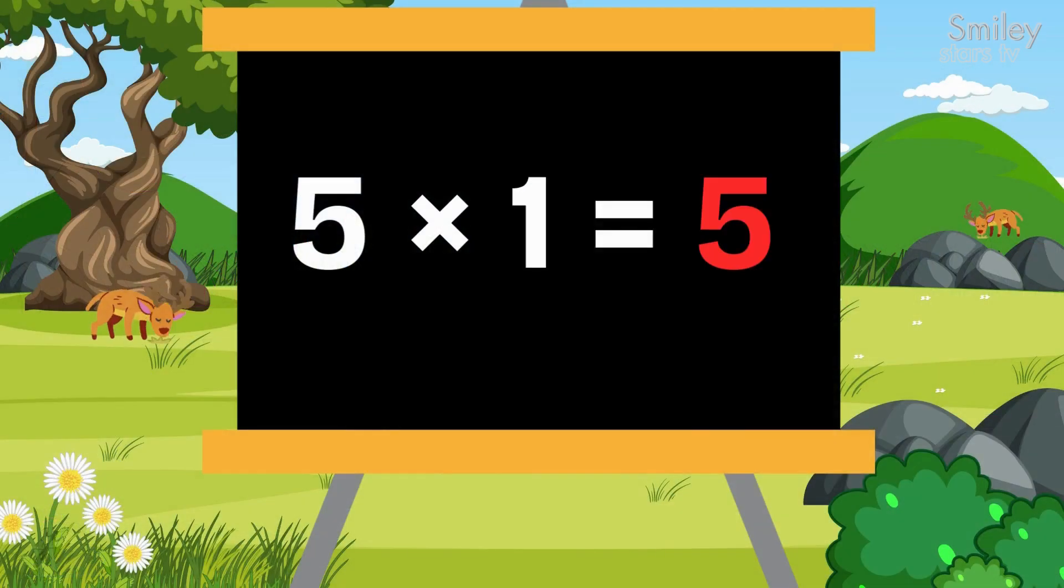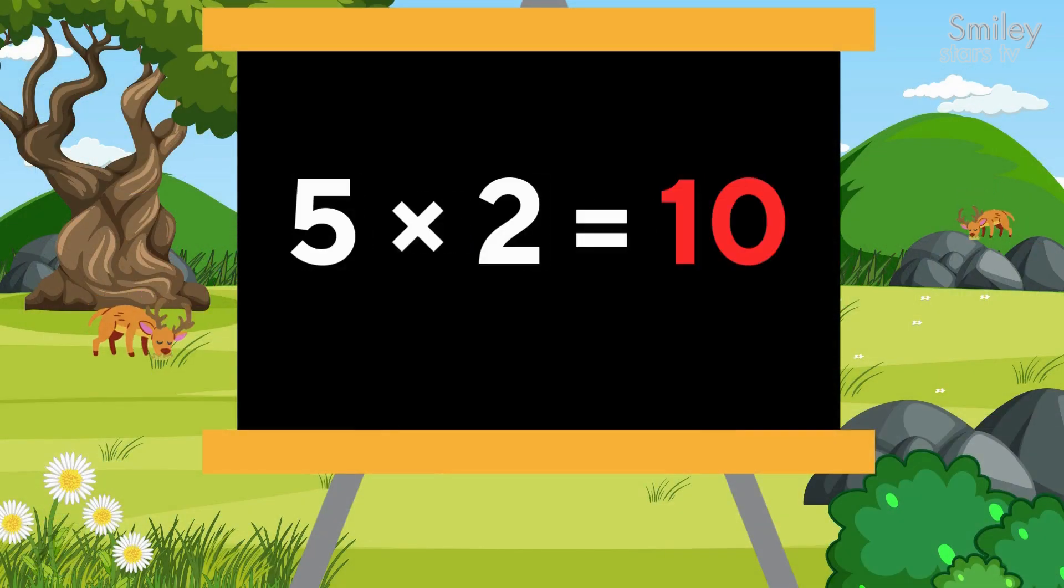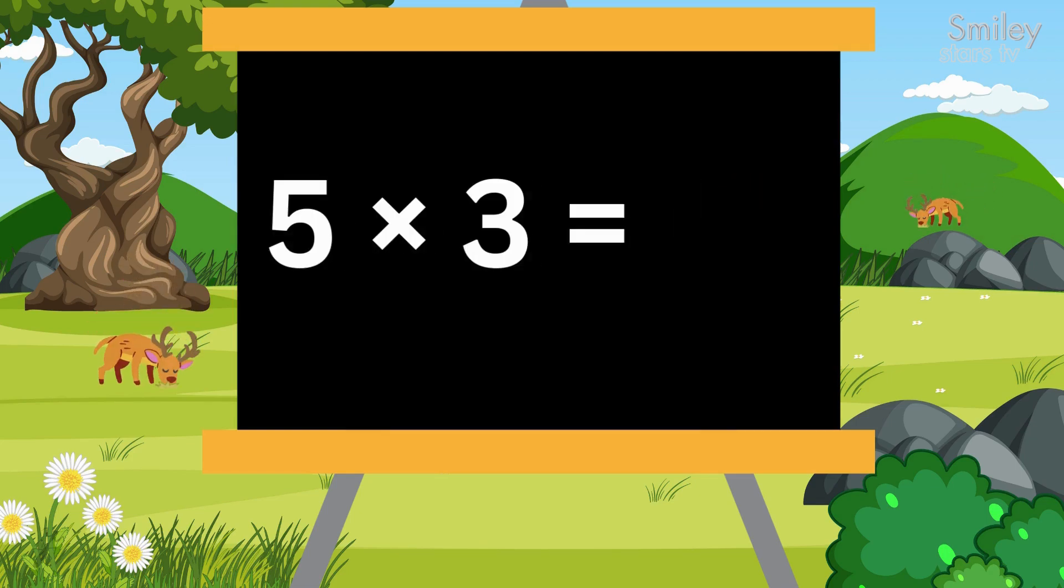Five ones are five. Five twos are ten. Again. Five threes are fifteen. Let's count to the end.